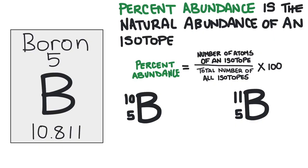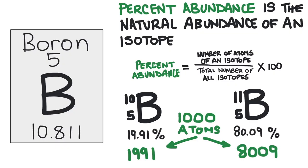The percent abundance of boron 10 is 19.91%, and the percent abundance of boron 11 is 80.09%. So if you had a thousand boron atoms, on average, 199 would be boron 10, and then 801 would be boron 11.